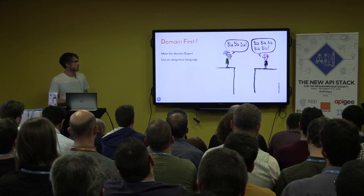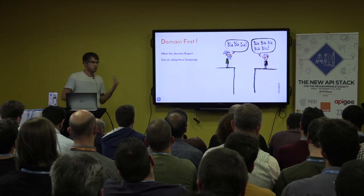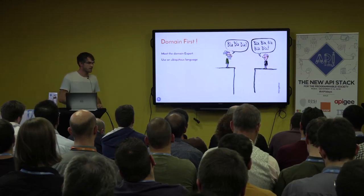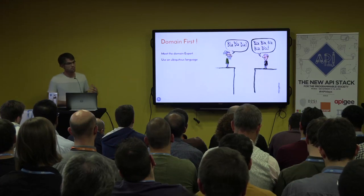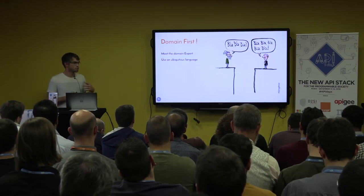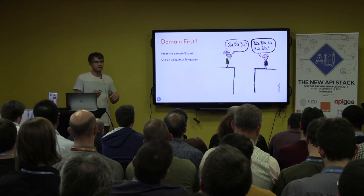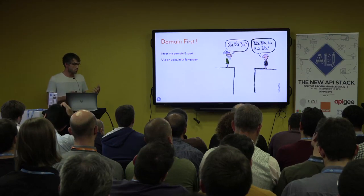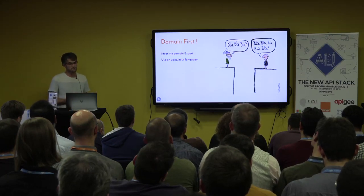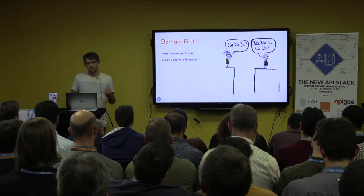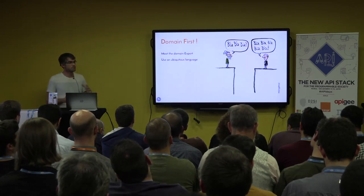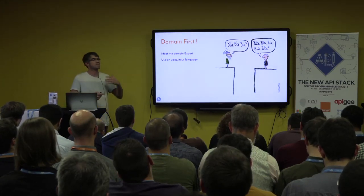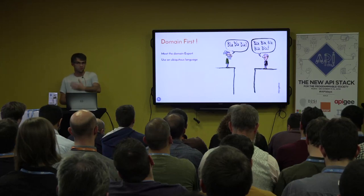Ubiquitous language means two things. The first is that everybody involved in the project should use the same language, from the sales brochure to the very nested object inside your code. If you come up with a new word, you should ask the domain expert if this thing exists in their terminology — and if not, you have come up with something new that only appears in your code. The second is that every concept should have a name, and two separate concepts cannot share the same name. What is 'account'? Is it a banking account, a leave account, a user account?